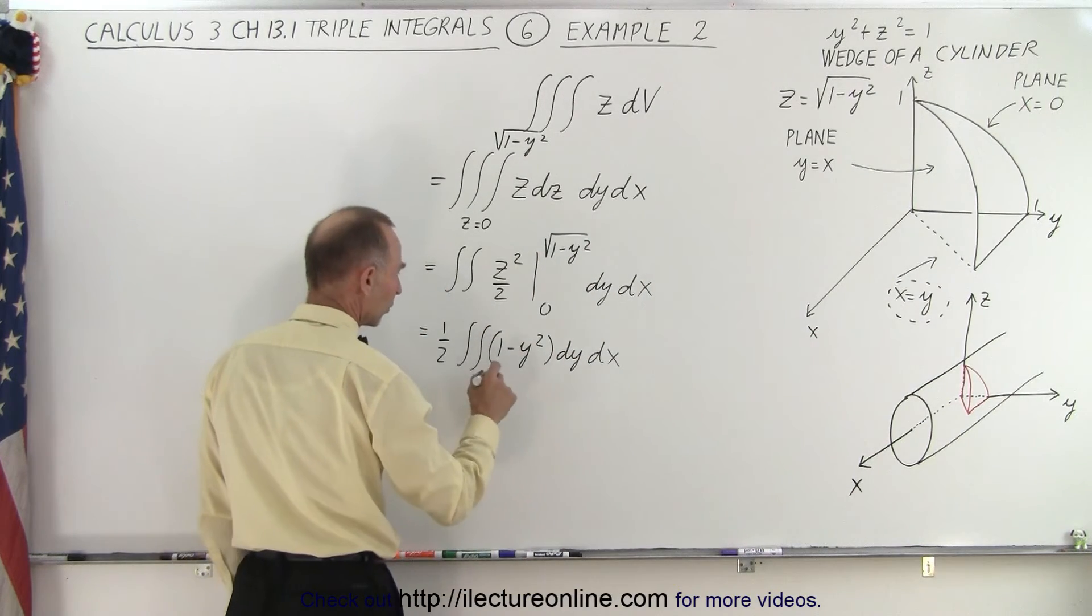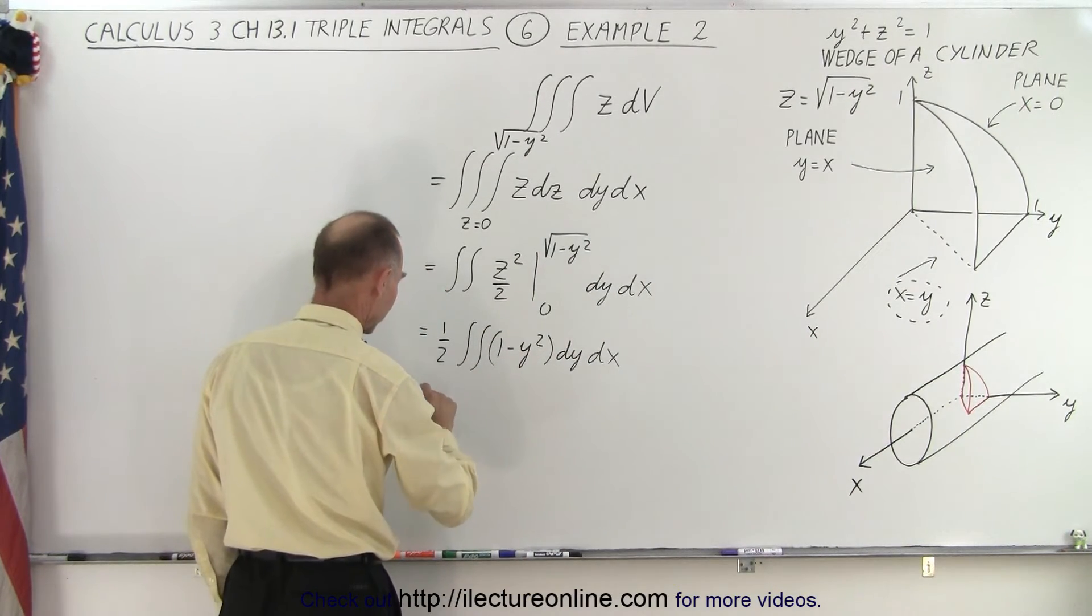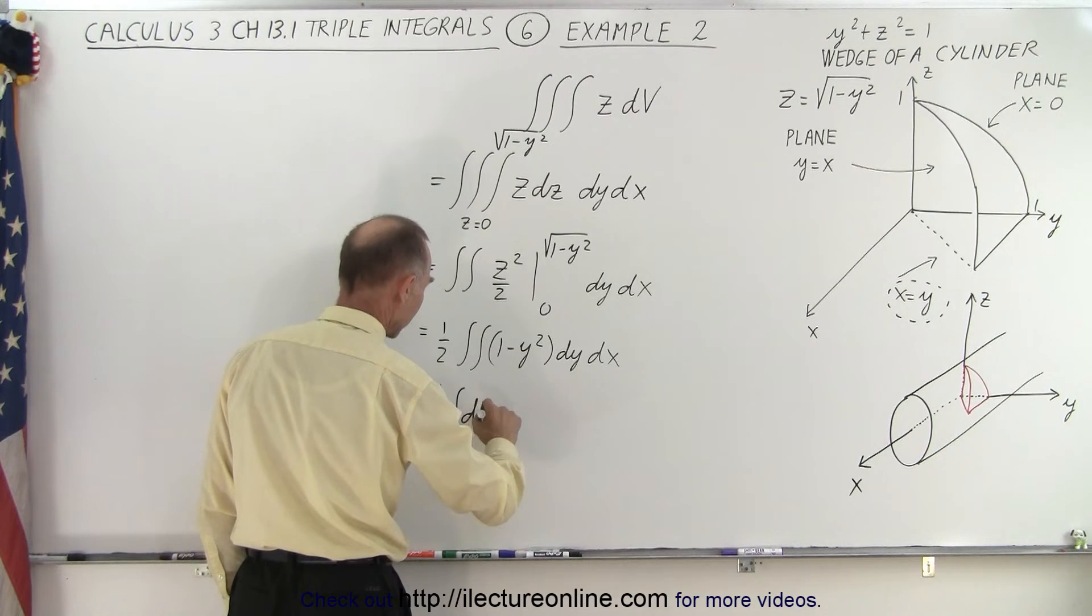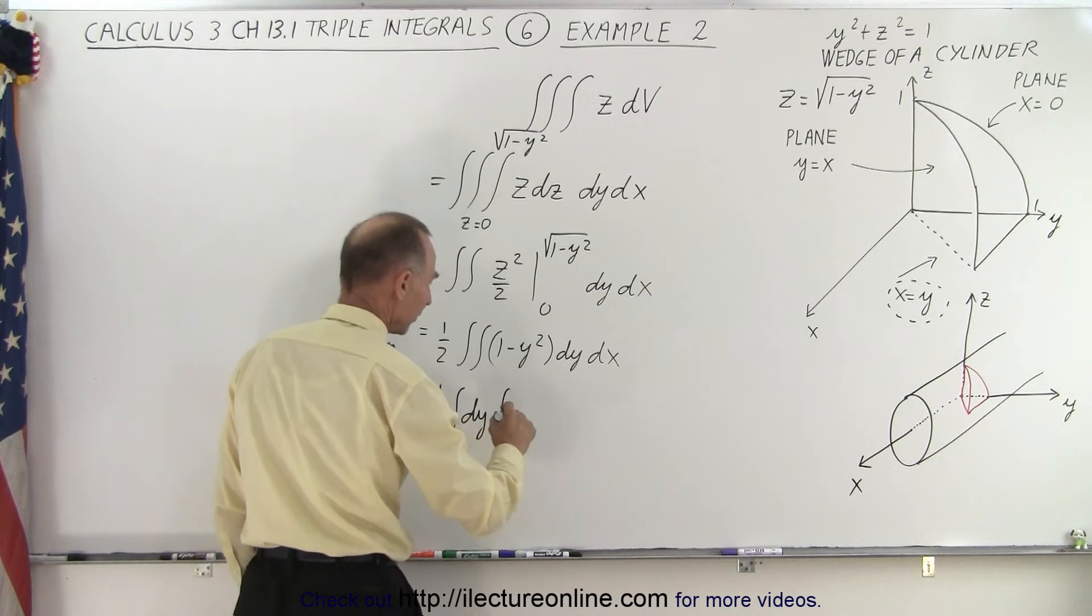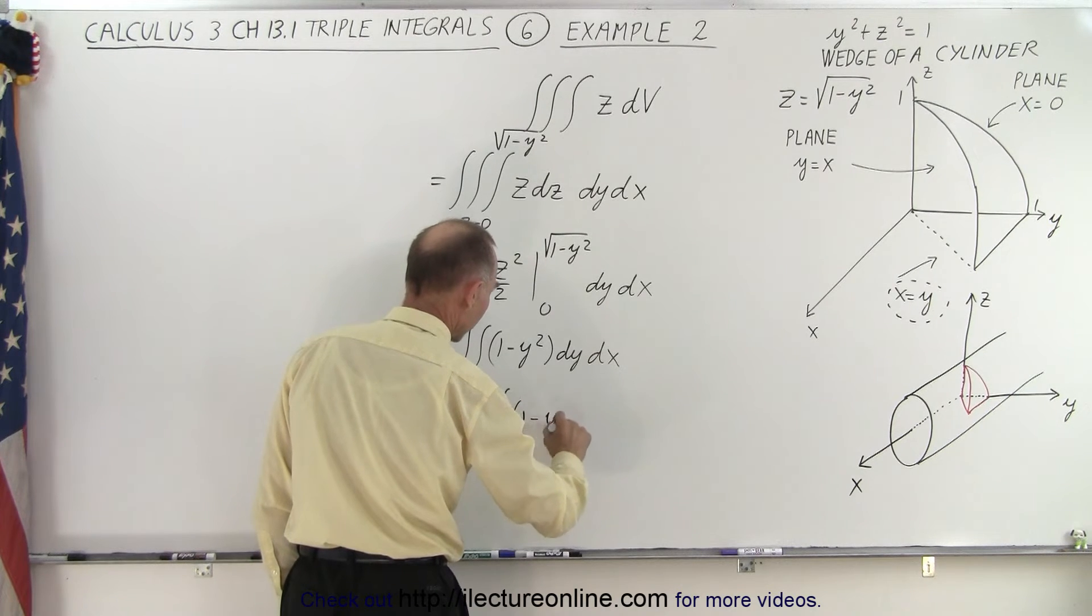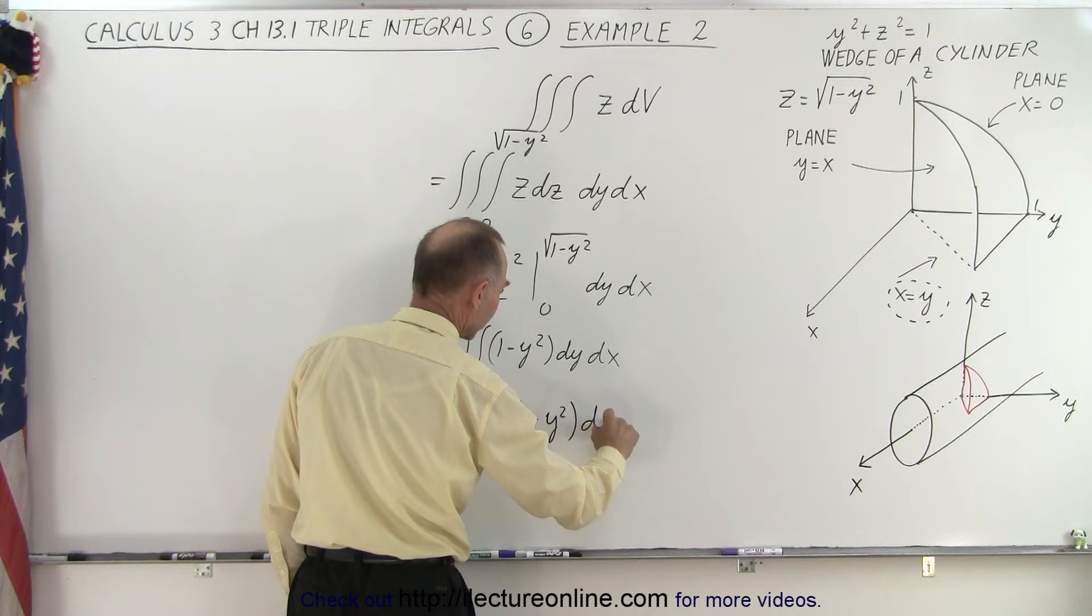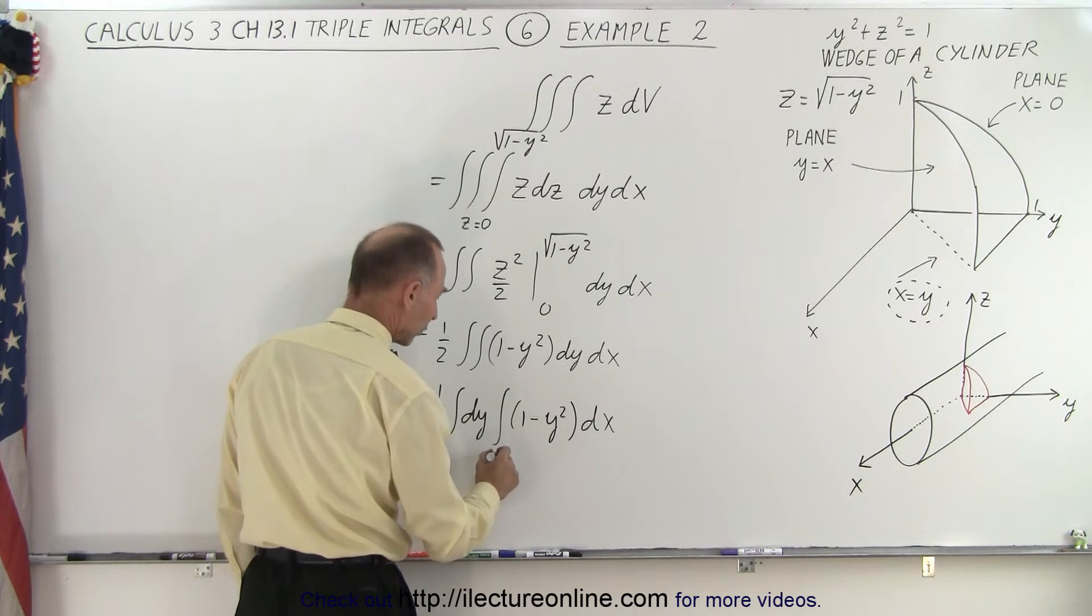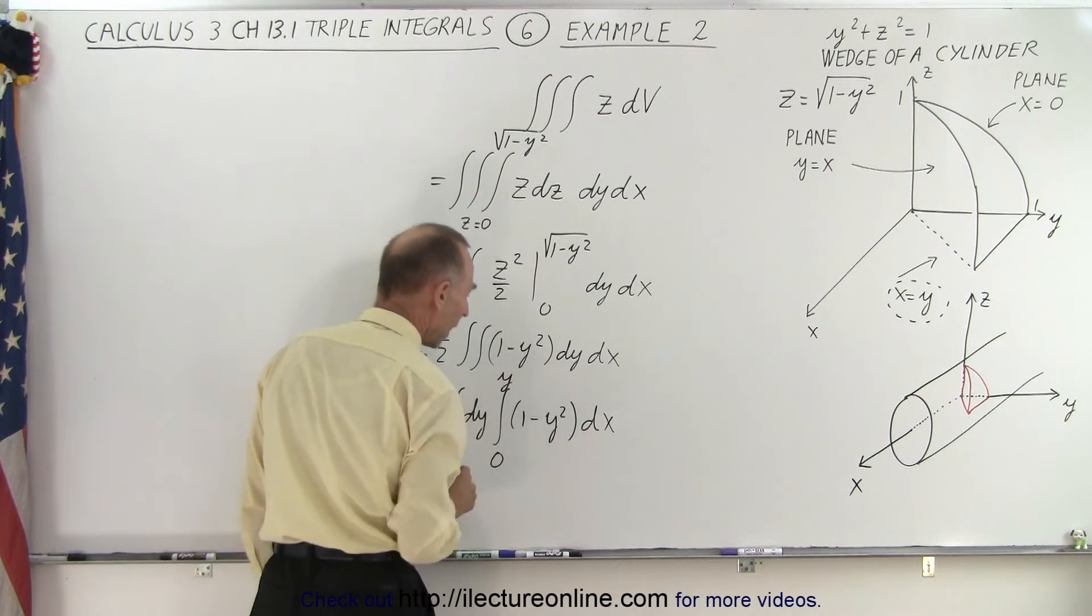So what we're going to do here is we're going to integrate this way, so this is equal to one half times the integral of dy times the integral of one minus y squared dx, so that becomes a constant and we're going to go from zero to zero to y.